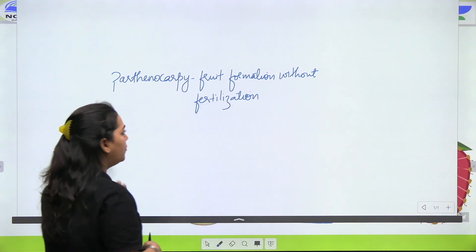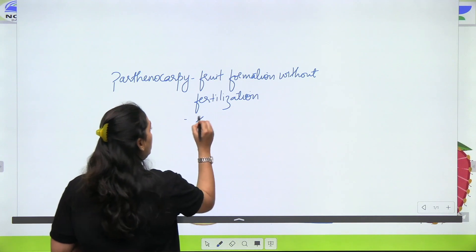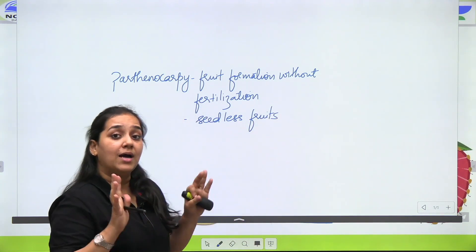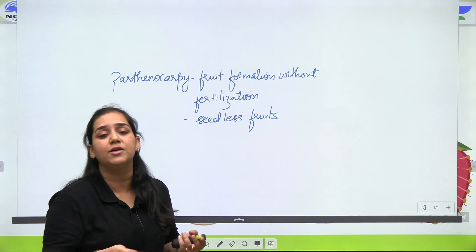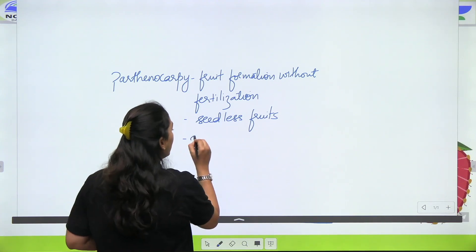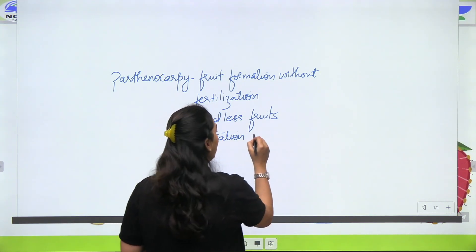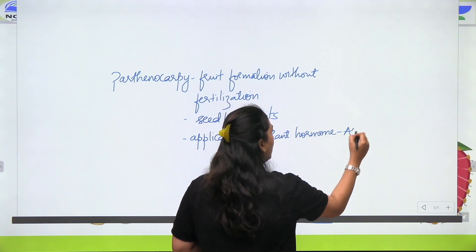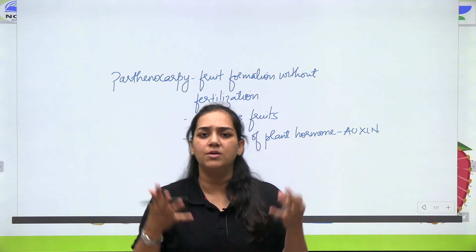Fruit formation without fertilization. Because fertilization nahi ho raha, aur jo ovary hai woh transform ho raha hai fruit ke andar, that is why the fruits that are formed are seedless fruits. Kyunki fertilization nahi hua, jiske chalte ovule did not transform into a seed — that is why the fruits are seedless varieties. Application of certain plant hormones — aapko plant growth and development mein jo content aapne padha tha usko yaad karna hai — application of which plant hormone? Toh yahan pe answer hai: auxin.